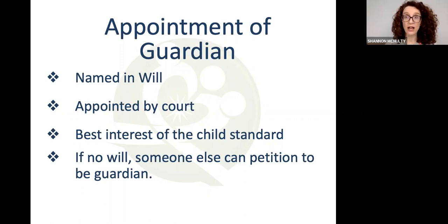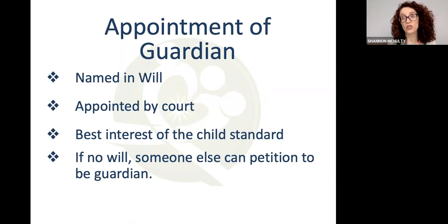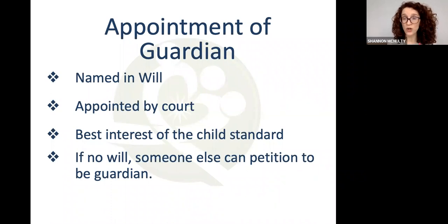Sometimes circumstances might have changed since the will was written. Generally, a named guardian would only be excluded if there was some criminal history, substance abuse, or similar issues. If more than one person petitions to be the guardian, the court will weigh what would be best for the child. If nobody is indicated or there is no will, someone else can petition and the court will entertain any petitions.